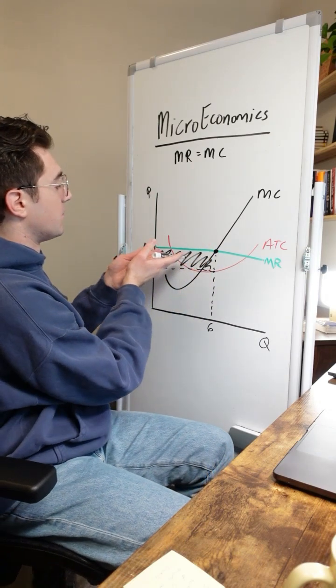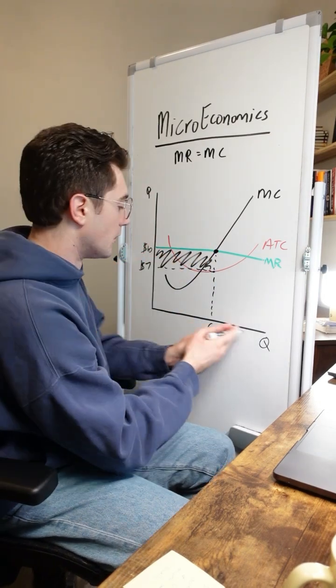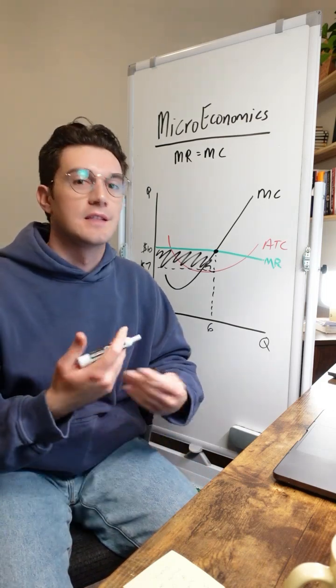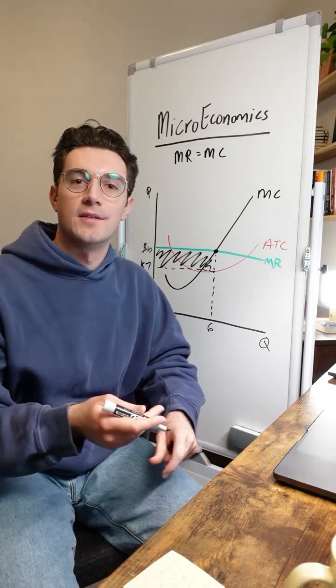Operating at the MR equals MC point is the biggest that this rectangle will be. More or less units would only shrink the profit this firm achieves, because the MR equals MC point is the profit maximizing point.